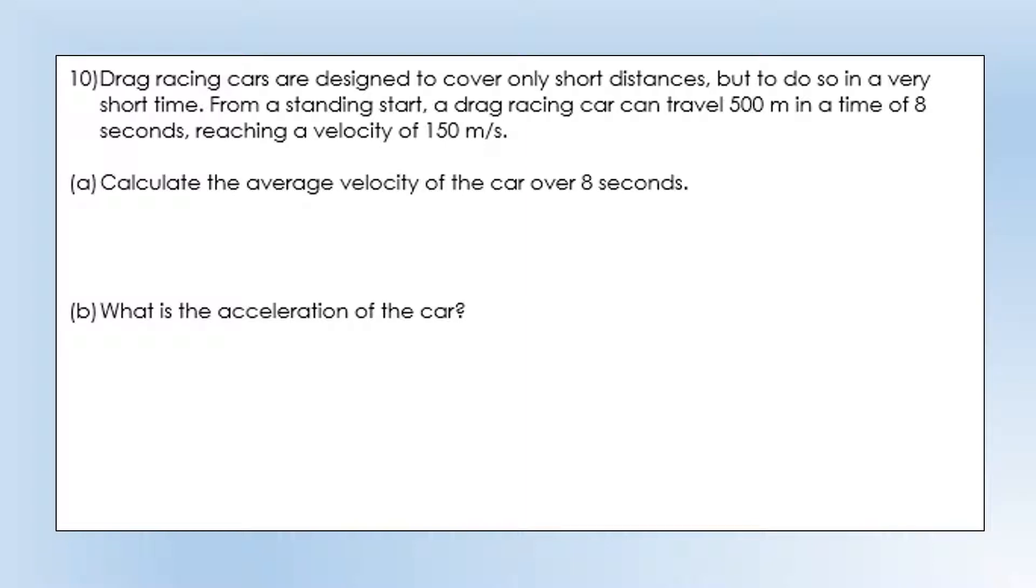Drag racing cars are designed to cover only short distances, but do so in a very short time. From a standing start, a drag racing car can travel 500 meters in a time of 8 seconds, reaching a velocity of 150 meters per second. Calculate the average velocity of the car. Average velocity is distance divided by time, so the displacement during that period of time is 500, the time is 8 seconds, so we have the average velocity.